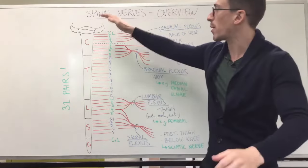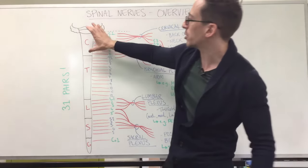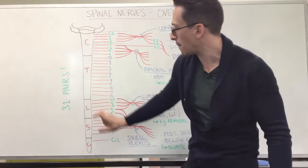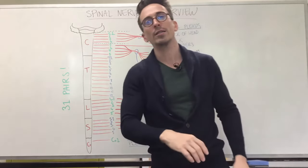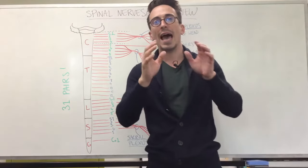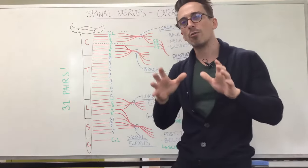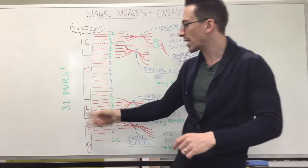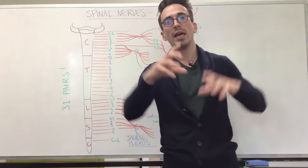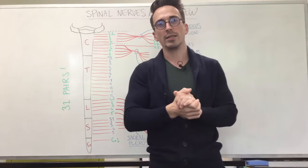So first let's look at the spinal cord. You can see that there's particular areas such as the cervical area, thoracic, lumbar, sacral and coccygeal areas. The cervical area has eight pairs of spinal nerves, the thoracic has 12, the lumbar has five, the sacral has five and the coccygeal has one. All together, 31 pairs of spinal nerves.